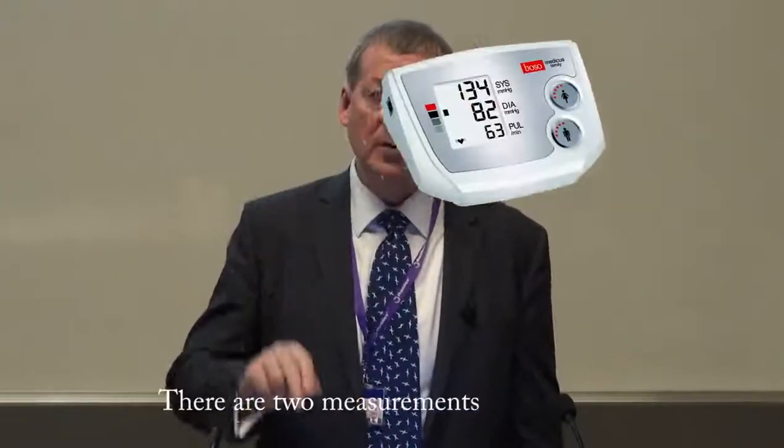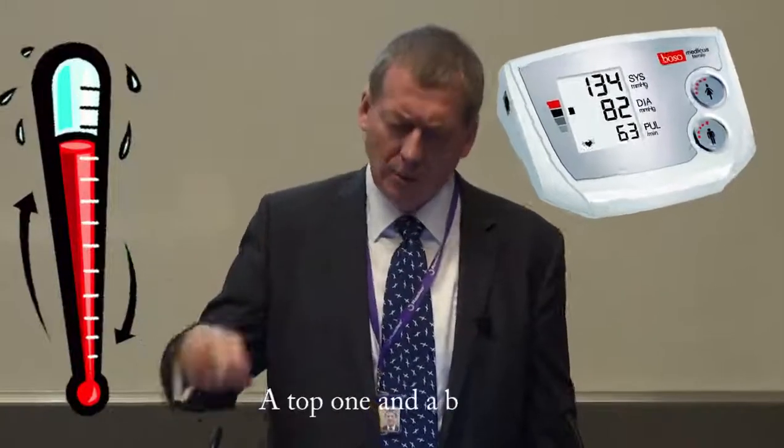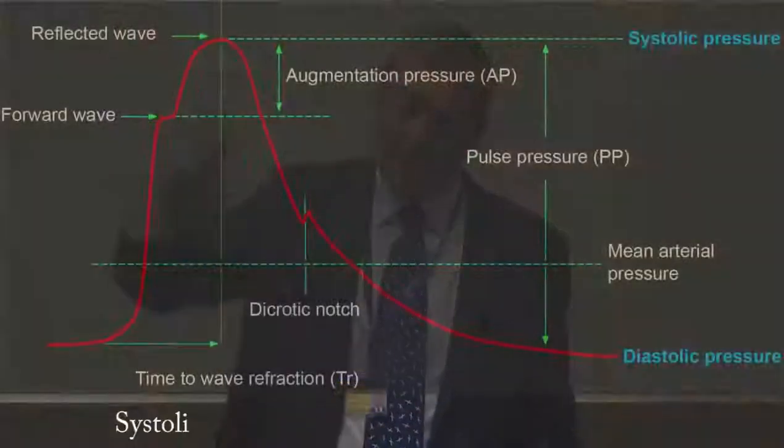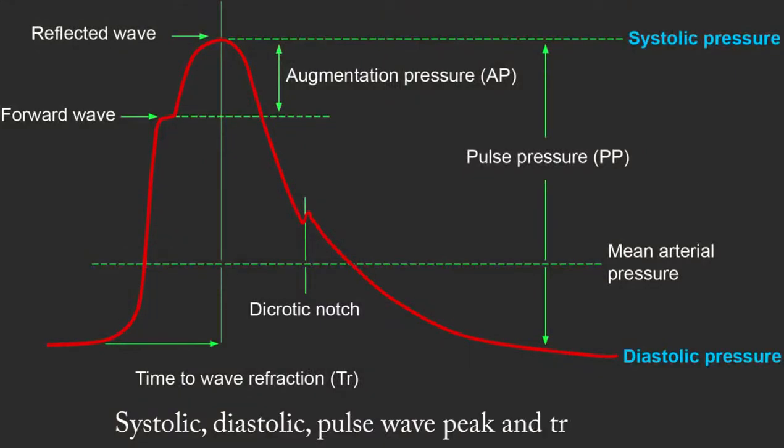There are two measurements that we make, a top one and a bottom. Systolic and diastolic, pulse wave peak and trough ones.